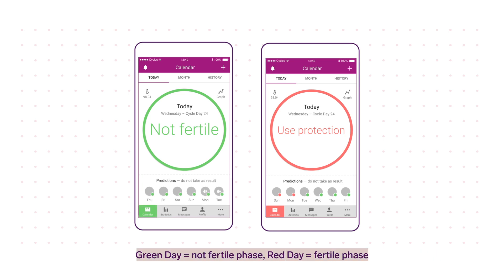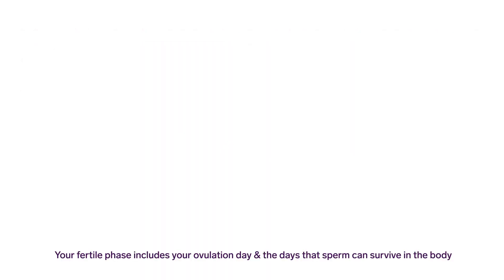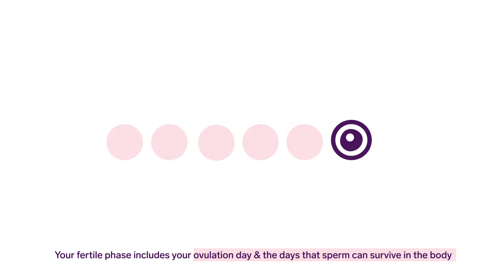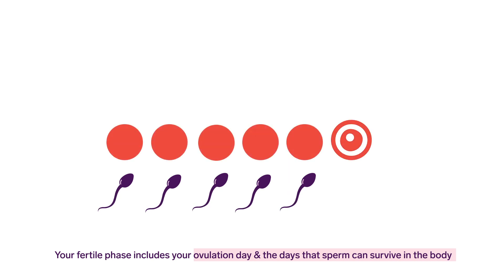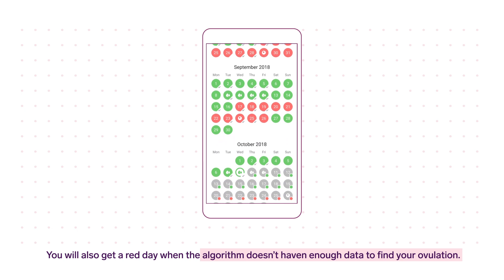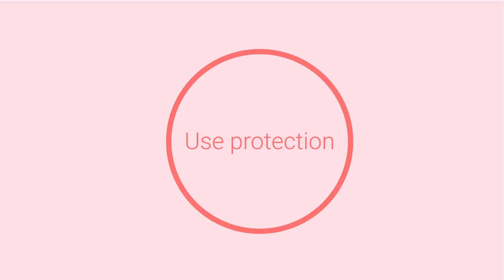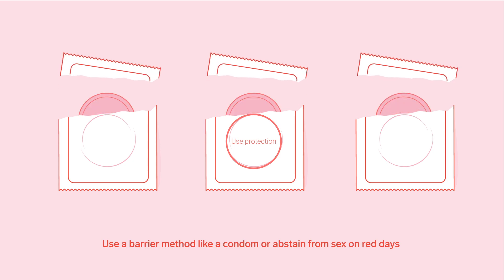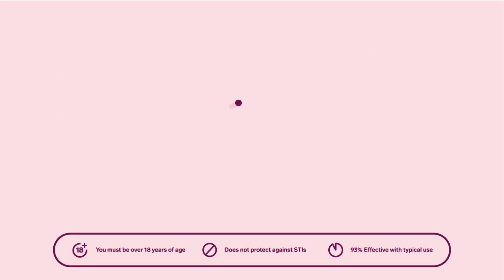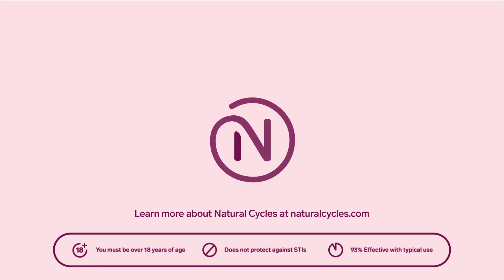If it gives you a green day, you are not in the fertile phase of your cycle. If it gives you a red day, you are in the fertile phase. The algorithm determines this by taking the day you ovulate and adding the preceding five days to account for how long sperm can survive. The app will also give you a red day if the algorithm doesn't have enough data to find your ovulation. For Natural Cycles to remain effective, you need to use protection or abstain from sex on red days. Find out if Natural Cycles could work for you by taking our assessment or reading our user manual.